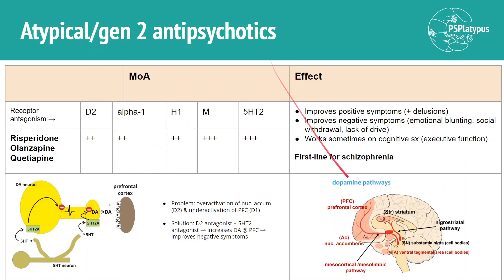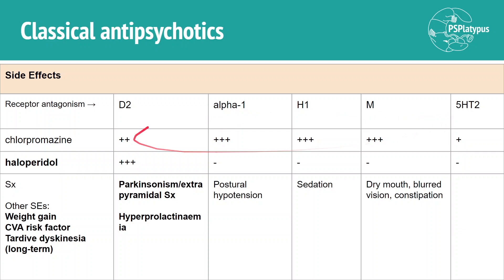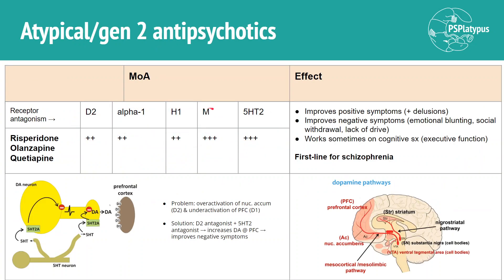Atypical second-generation antipsychotics include risperidone, olanzapine, and quetiapine. We target every one of these receptors. The key advantage of these drugs is that they improve both positive and negative symptoms, and sometimes also work on cognitive symptoms. The reason for this is due to serotonin antagonism, which is much more marked than in any other class.